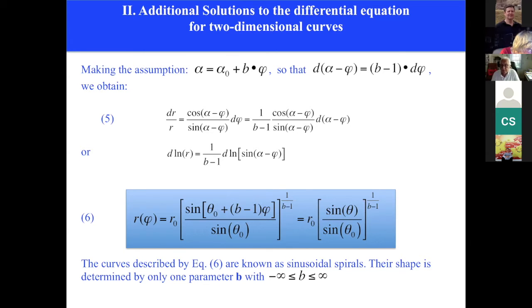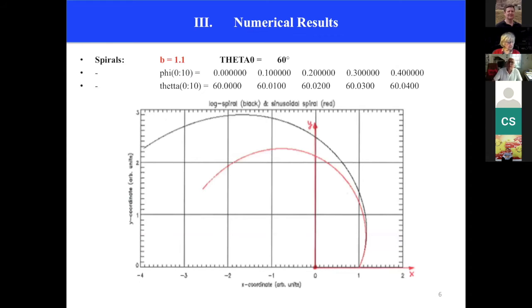It turns out that the logarithmic spiral is obtained if B is equal to one, which appears to be the singularity in equation six. So if we investigate B values in the neighborhood of one, we obtain the following picture.